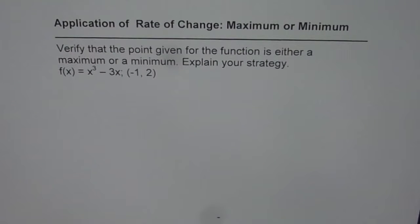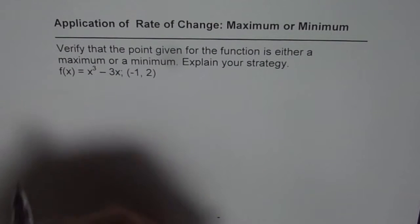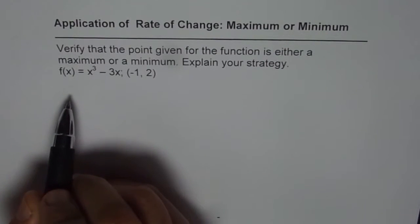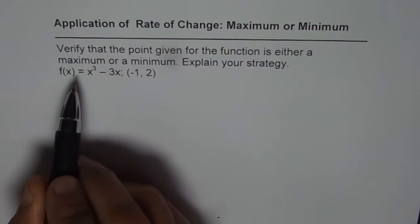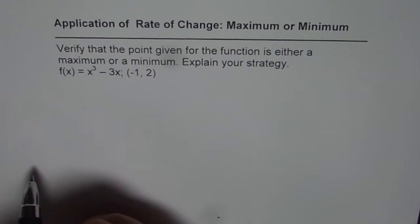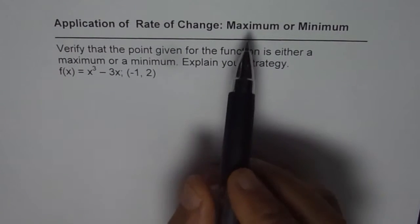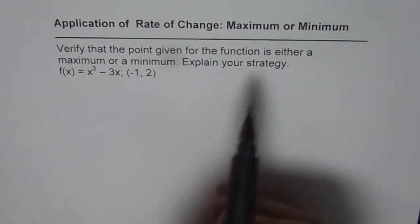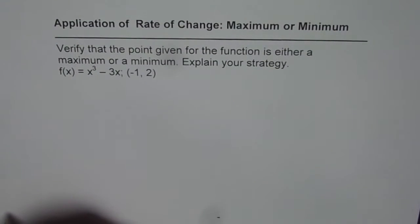The difficult one is using the difference quotient method. Whenever we want to find instantaneous rate of change, we can always find the difference quotient. For a maximum or a minimum, the slope should be 0.